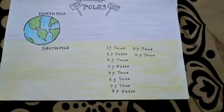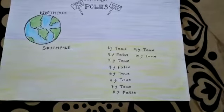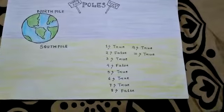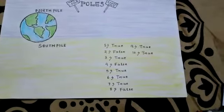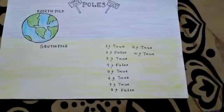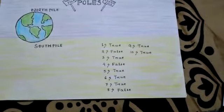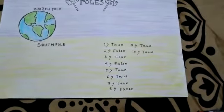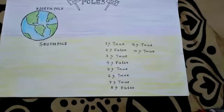Number five: there is no land at the North Pole; it is covered with thick ice which may be five to nine feet deep, and one can walk on it — the answer is true.